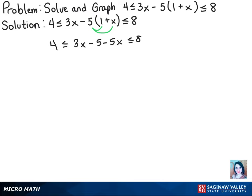Now we want to combine both of the x terms in the middle. So doing that will give us 4 is less than or equal to negative 2x minus 5 is less than or equal to 8.